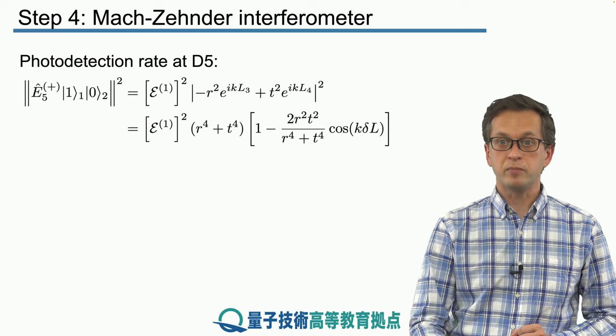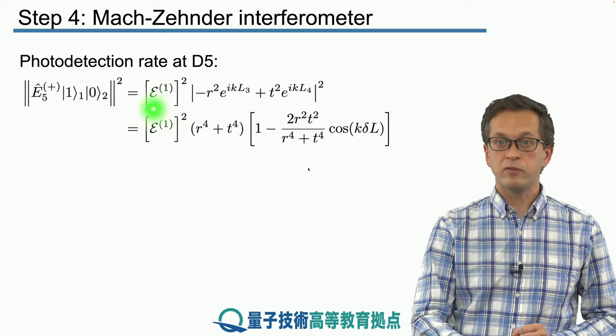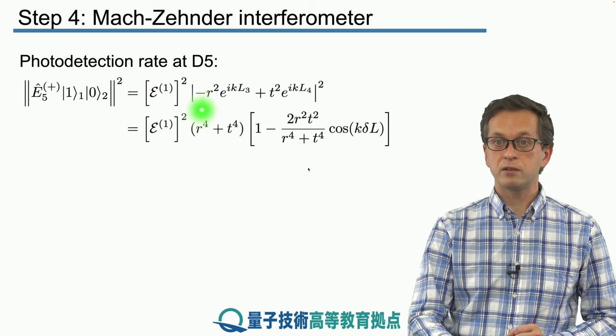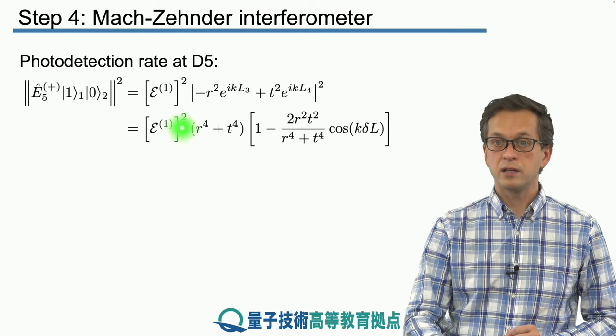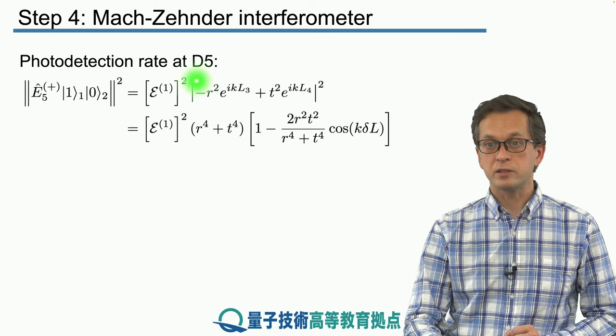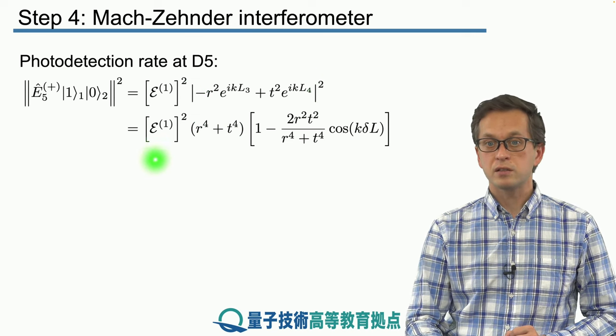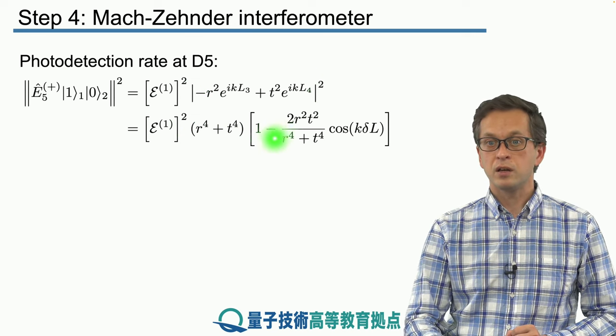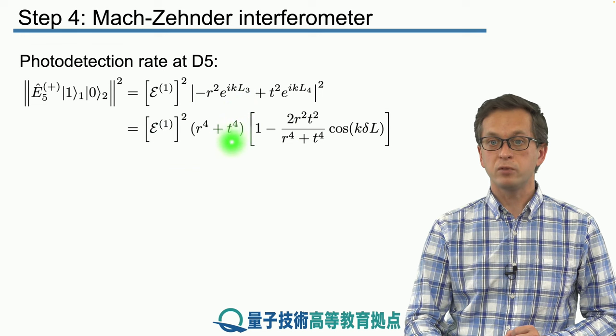And that's very simple. So we get the following. We got the 1 photon amplitude squared times this expression. And we compute the modulus of this expression.